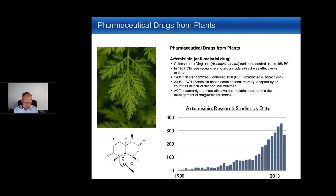The artemisinin story highlights a broader issue with herbal medicine research: something known for 2,000 years, with human trial evidence from 1984, still required decades and an enormous volume of studies before the World Health Organization changed their policies. For people who say herbs don't work — that isn't fair. Many herbs do work; the problem is insufficient research funding and time invested, and even when research exists, it may not be accepted or adopted quickly.